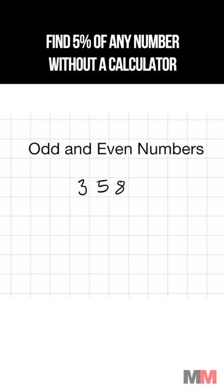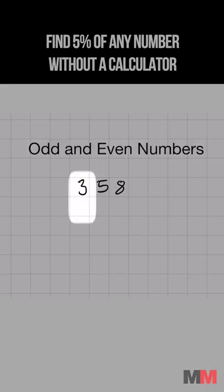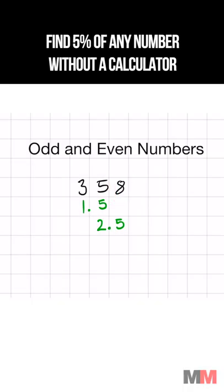What if you have a mixture of odd and even numbers? Start with the highest place value. Half of 3 is 1.5. Now cut 5 in half—half of 5 is 2.5—and then the last part, half of 8 is 4.